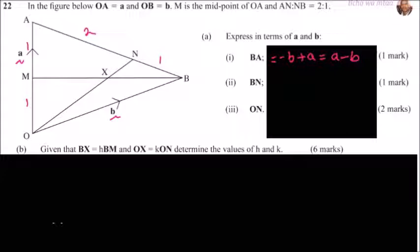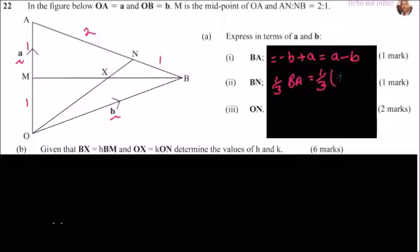Now we find BN. BN is a fraction of BA. Since AN to NB is 2 to 1, N divides AB in ratio 2:1, so BN is 1 out of 3 parts of BA. We already described BA in part one. So BN equals one-third of (a minus b).